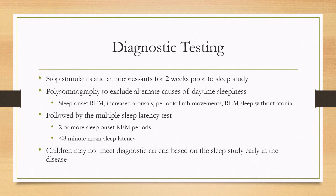Features on polysomnography suggestive of narcolepsy include sleep onset REM, increased arousals, periodic limb movements, and REM sleep without atonia. This is followed by the multiple sleep latency test, which is the most important test to diagnose narcolepsy. On the MSLT, you will see two or more sleep onset REM periods as well as a sleep latency under eight minutes.